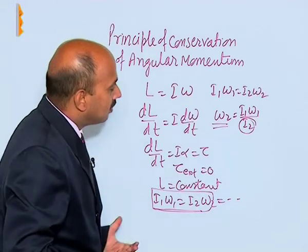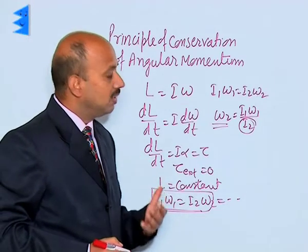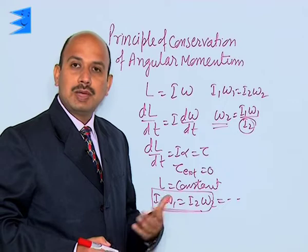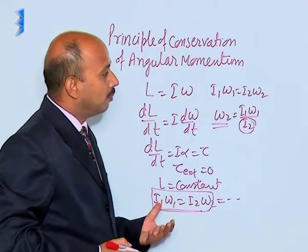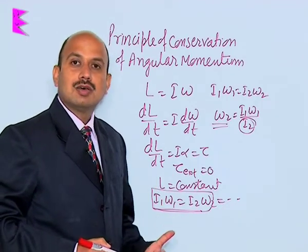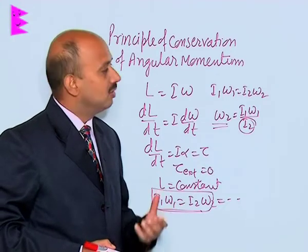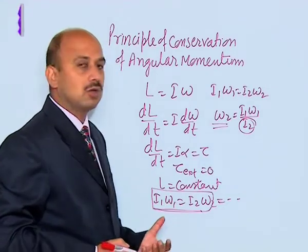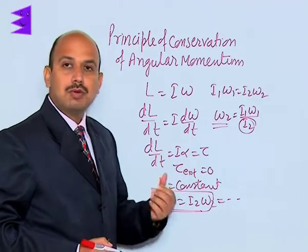So, ballet dancer manipulates her angular velocity or spinning velocity with the help of folding her hands or stretching her hands and legs. So, this is an example of conservation of angular momentum.